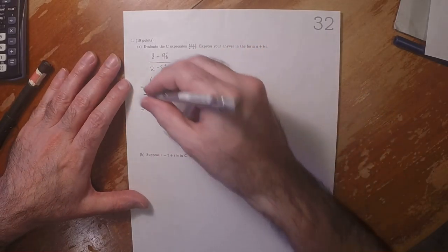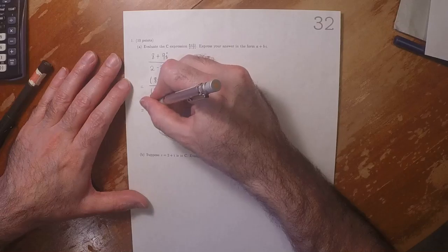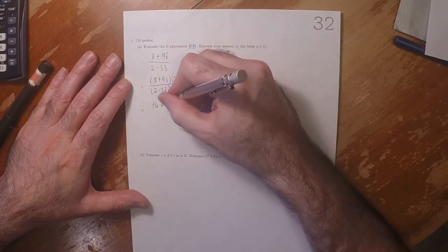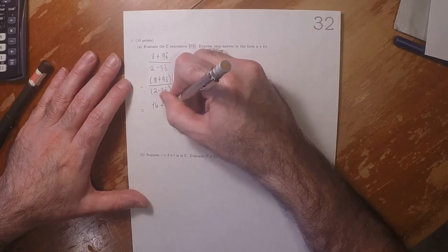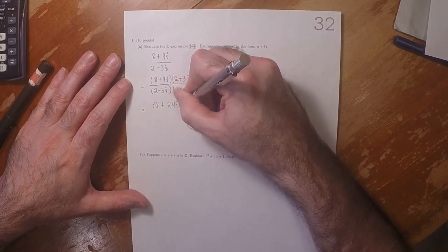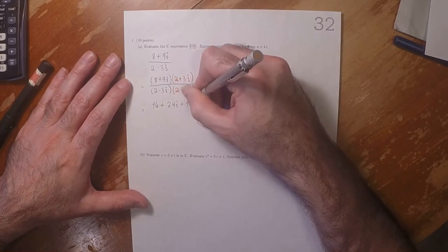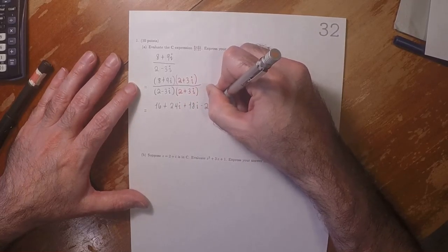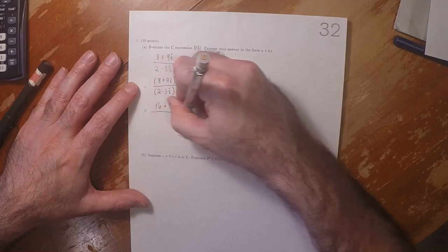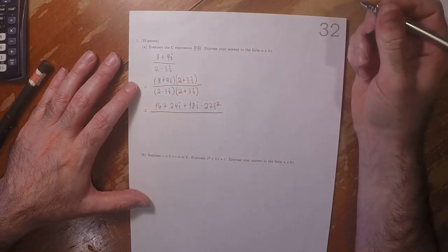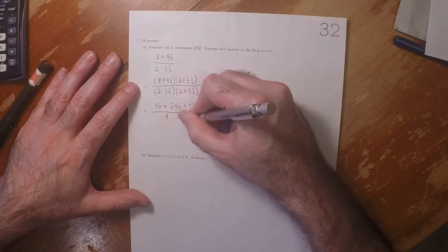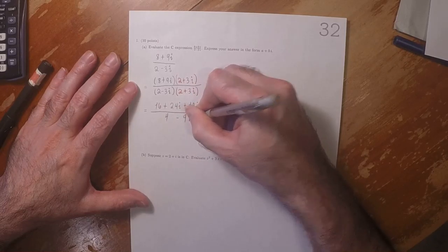And we'll FOIL this out. That would be 16 plus 24i plus 18i minus 27i squared, divided by 4 minus 9i squared.